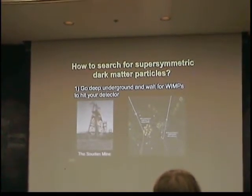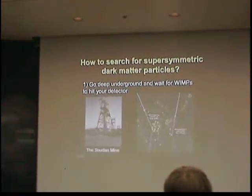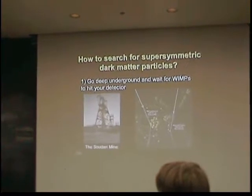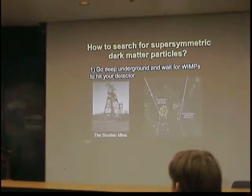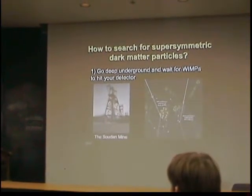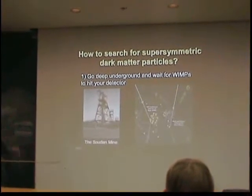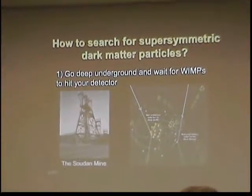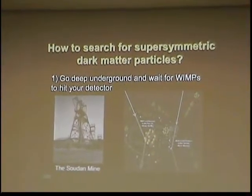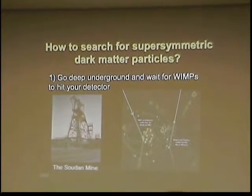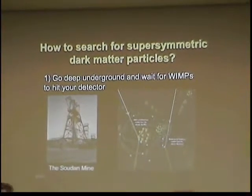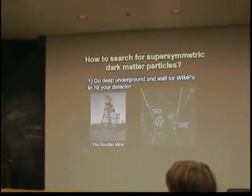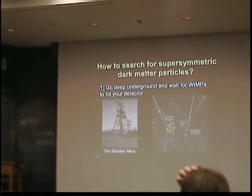So how do you look for supersymmetric particles? One way is to go deep underground and look for them in a detector. This is the Sudan mine in northern Minnesota — 2,400 feet below the surface of the earth. They have a detector made of germanium and silicon that's looking for a WIMP coming in, scattering off the nuclei of their target, and recoiling away. It's a very hard business to do, but these experiments are getting closer and closer to hopefully discovering or ruling out these kinds of particles.